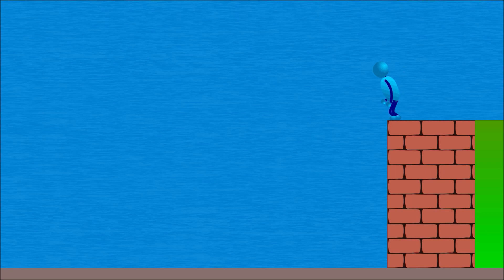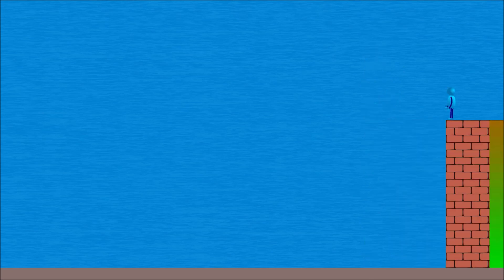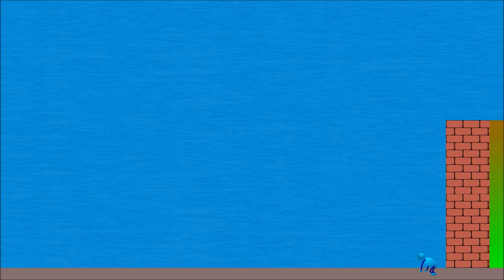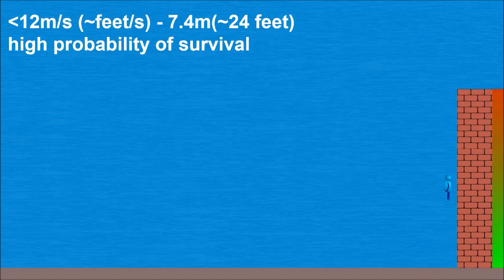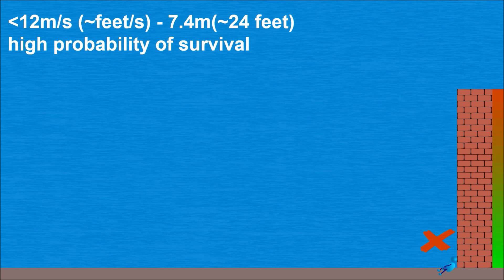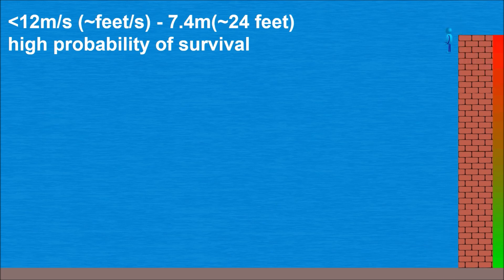First let's see what are dangerous impact velocities. When you fall on a hard surface, of course not on your head, based on NASA acceleration studies with a fall speed of up to 12 meters per second, which you reach after a free fall of 7.4 meters, you would survive with a high probability.